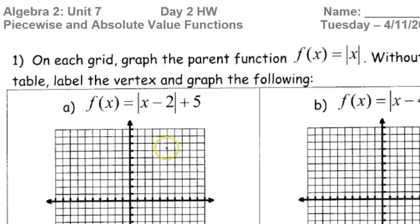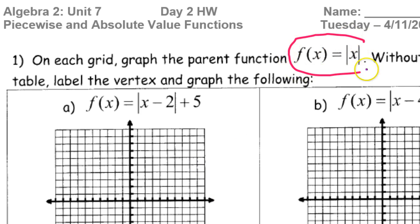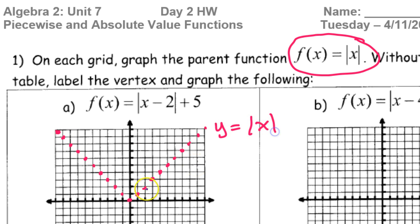In this video we will be graphing some absolute value functions. One thing to keep in mind is that the parent function, which is just the absolute value of x, is going to be in the shape of a V. The parent function starts at the origin and goes into a V shape from there. So this is what the graph of y equals the absolute value of x looks like. The rest of these will be transformations of this.